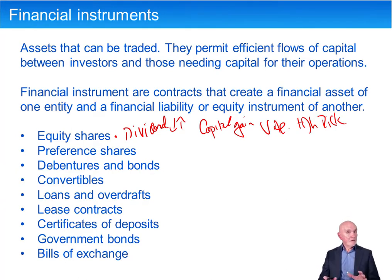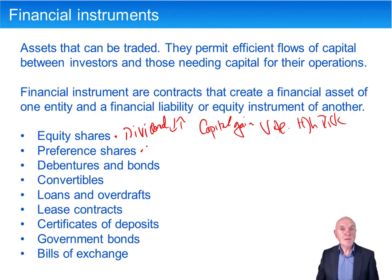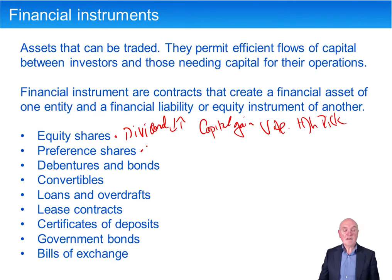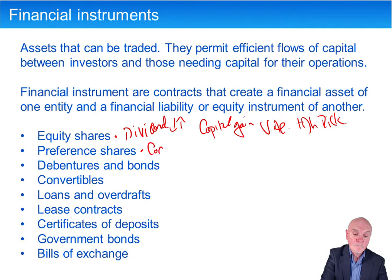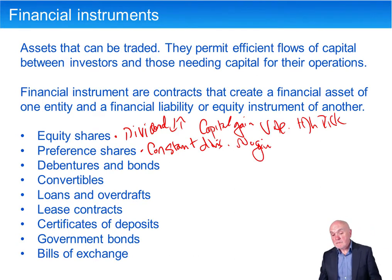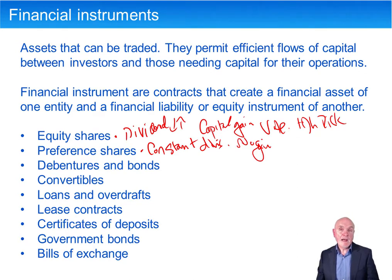Preference shares are relatively unimportant as financial instruments, but you put money into the company and get a preference share out. Here the dividends are constant. However, there's likely to be no capital gain and no vote. But they're slightly lower risk because the dividends are constant and preference shareholders have to be paid back before equity shareholders.